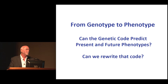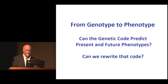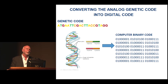We've had prevailing questions: can the genetic code predict your current phenotype and can we predict the future? Can we rewrite that code, which the next speaker will address with the wonderful discovery of CRISPRs? When we first sequenced genomes, we converted the biological four-digit code into ones and zeros in the computer.